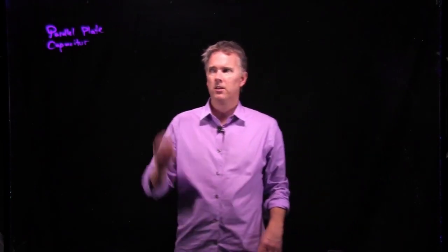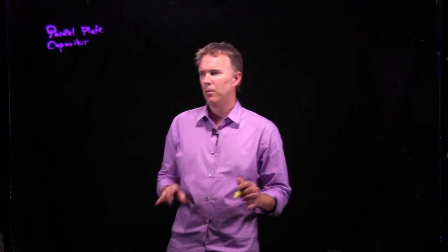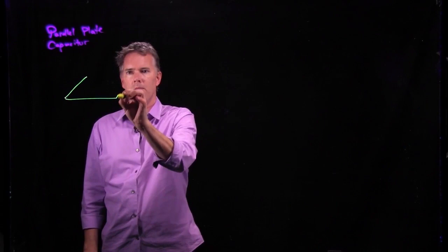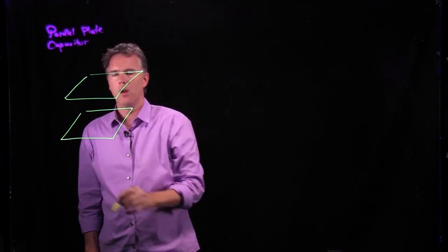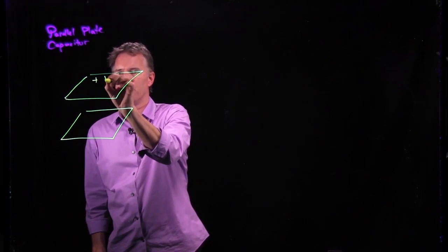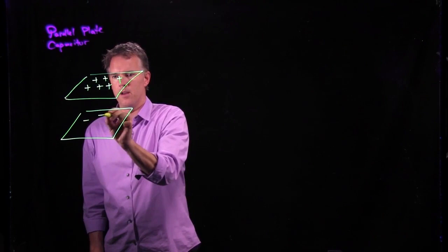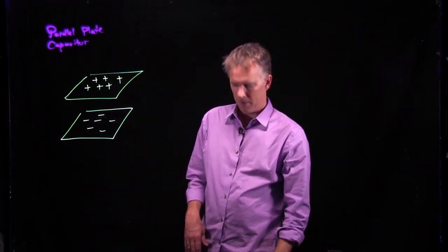Hello class, Professor Anderson here. Let's talk a little bit more about the parallel plate capacitor. We know exactly what a parallel plate capacitor looks like. You take one metal plate, put a bunch of charge on it, take another metal plate, put a bunch of the opposite charge on that one. So if I put positive up here and I put negative down here, then this is my parallel plate capacitor.